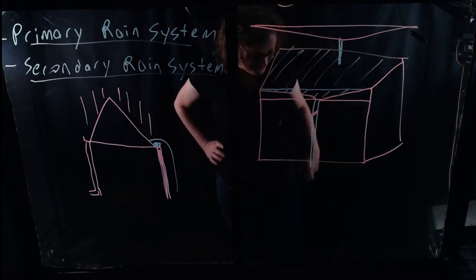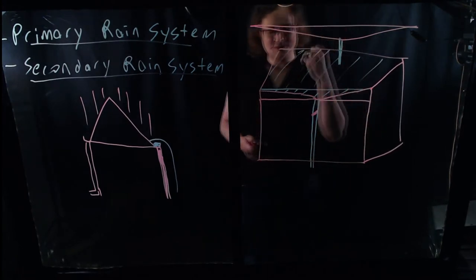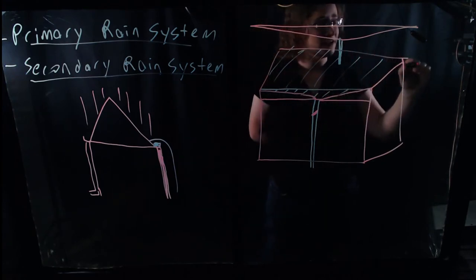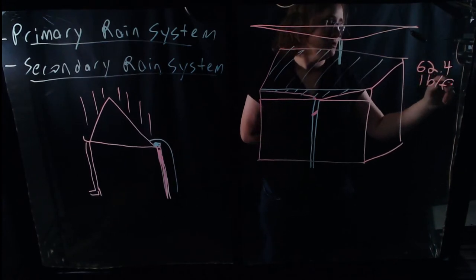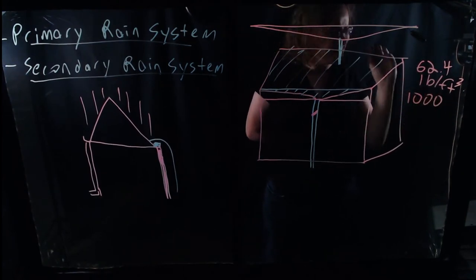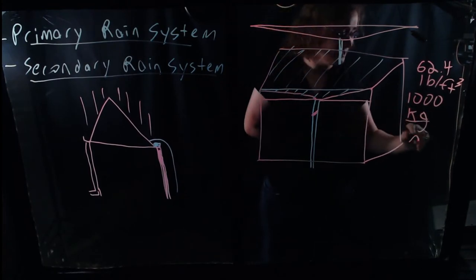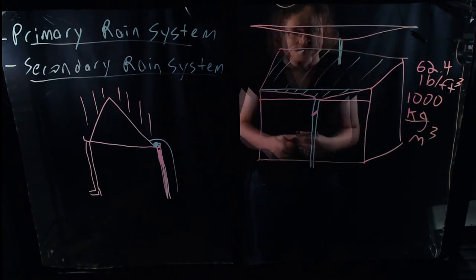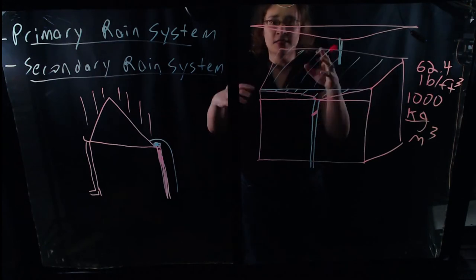Water is heavy. Most people have some intuitive sense of this. In English units, it's 62.4 pounds per cubic foot, or approximately 1,000 kilograms per cubic meter. It's not as heavy as steel or concrete, but it does have a decent density to it. And more importantly, when you start applying it over a very large area, the weights become significant. The actual depth of water we're talking about might not be very much — not many feet of water — but when you apply it over a massive flat roof, and buildings with flat roofs do tend to be very large, it matters.